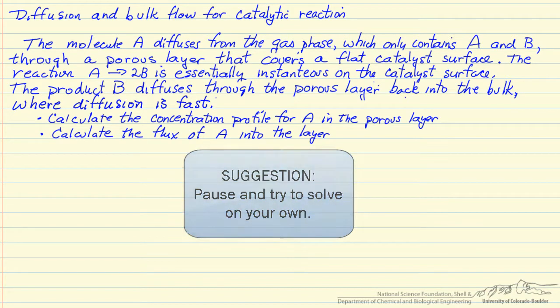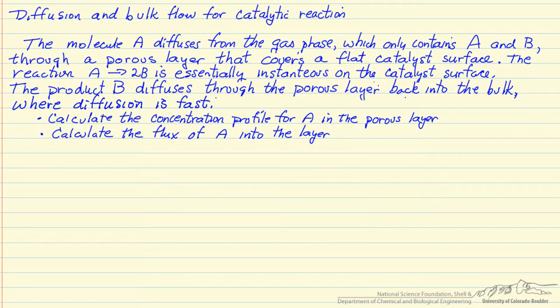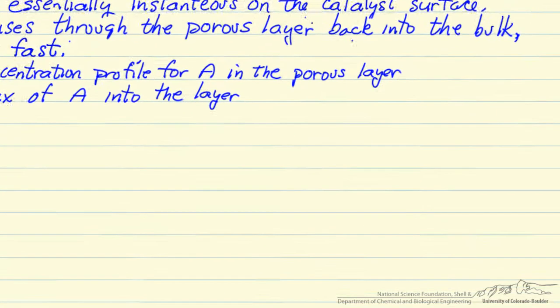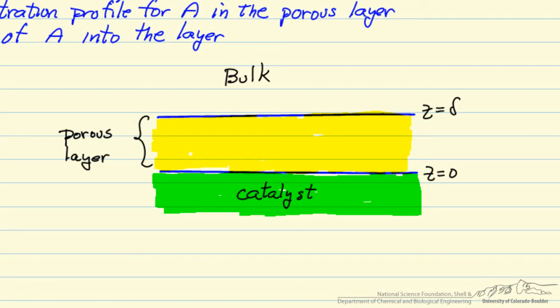So the first thing we want to do is look at a diagram that represents the system. So we have this porous layer where our reactant A is diffusing through this non-catalytic layer, and react on the catalyst surface.